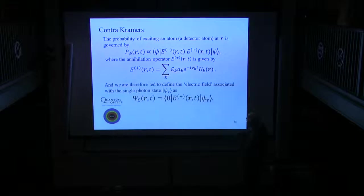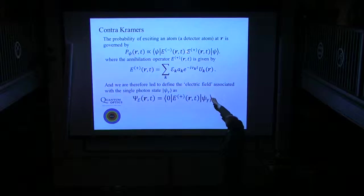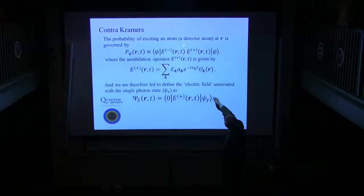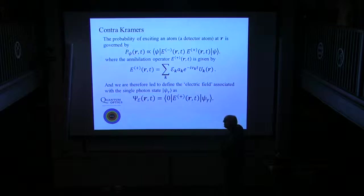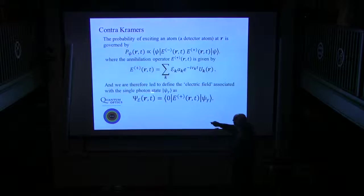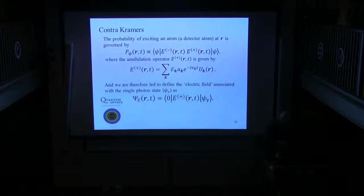Now, come back up here. Put in a complete set of states. But since this is a one-photon state, only the vacuum will survive. So vacuum, vacuum. Bracket. Therefore, we have the psi function mod squared is what it is that we're detecting. So we're led to define the electric field associated with a single photon. Thus, this is exactly what we do for electrons, right?